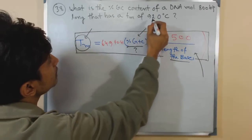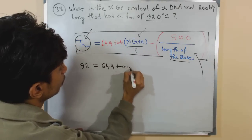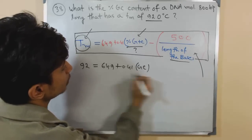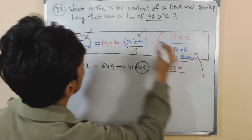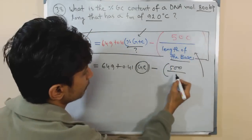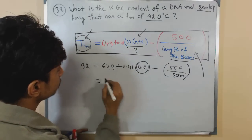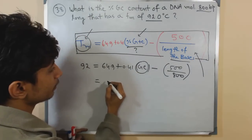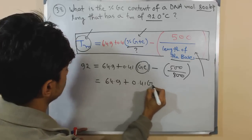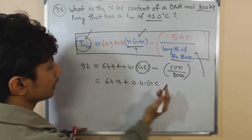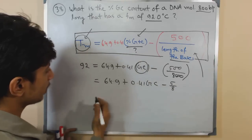Let's do it now. Tm here is given as 92 equals to 64.9 plus 0.41 into GC, that is the content we need to calculate, minus 500 divided by length of the bases given here is 800 base pair. So let's write the values, 64.9 plus 0.41 GC minus 5 by 8.